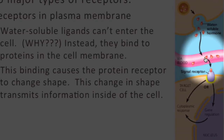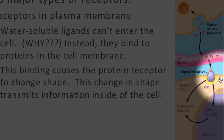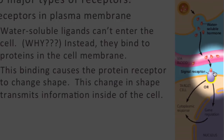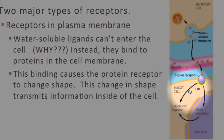So again, we have our red ligand. This time it's water-soluble, so it cannot pass directly through the phospholipid bilayer. Instead, it binds to a protein receptor that's embedded in the plasma membrane. When the ligand binds to the protein receptor, that triggers a conformational change or shape change in the protein receptor, which then triggers other changes within the cell.